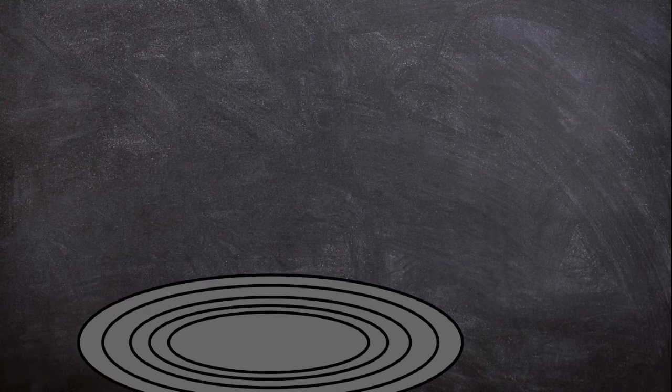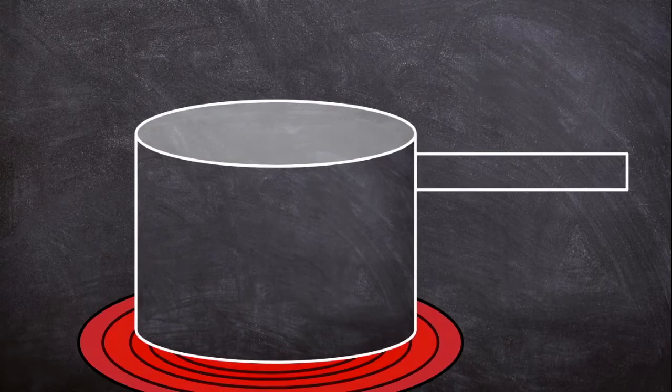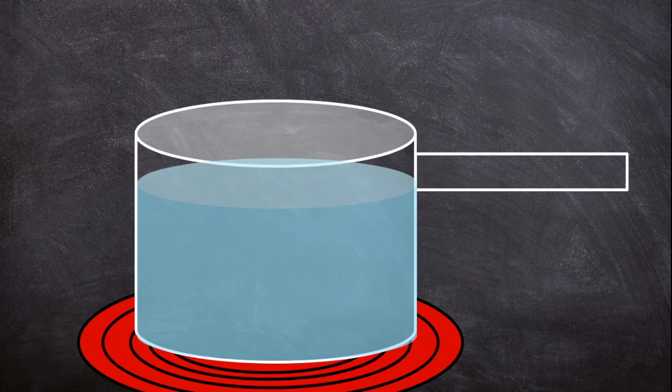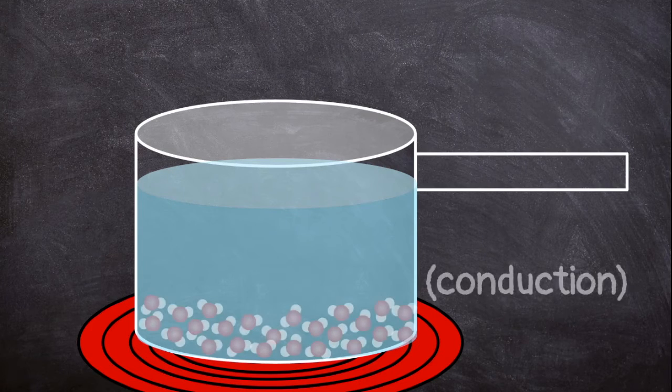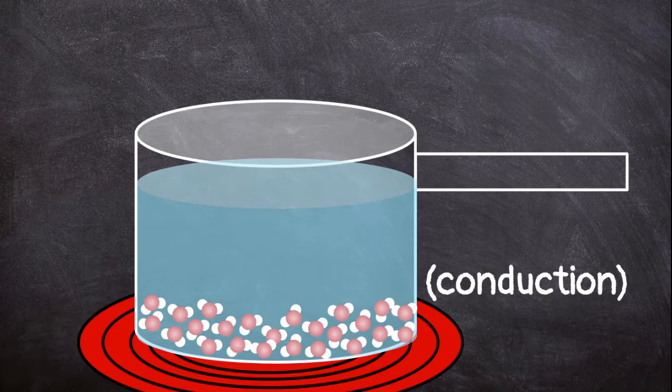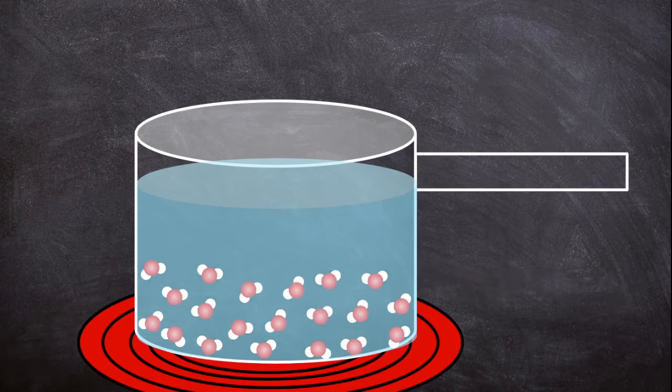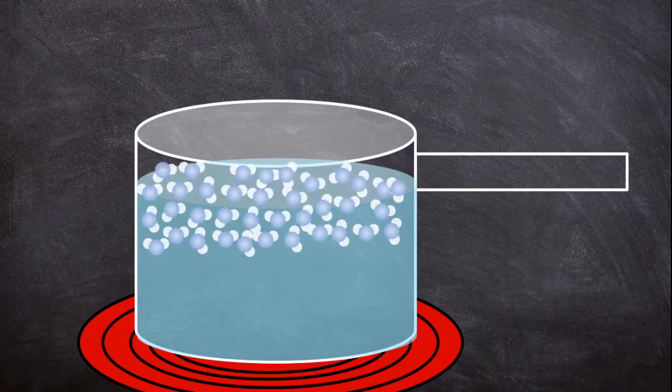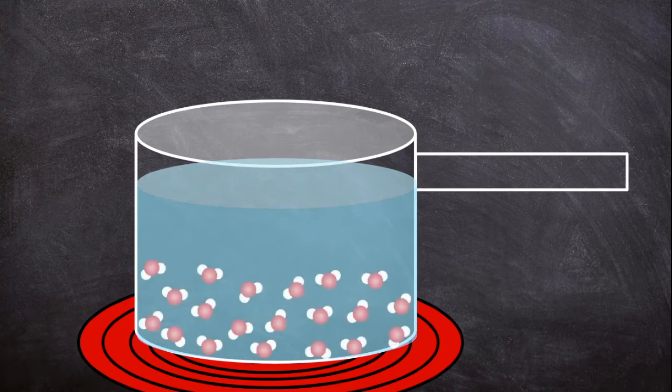Heat in liquids and gases also moves through convection. If you put a pot of water on the stove, the water at the bottom of the pot will get hot first. When that water gets hot, its molecules spread out. This makes the water less dense. It rises to the top of the pot and the cold water sinks to the bottom.